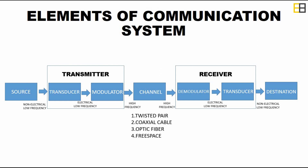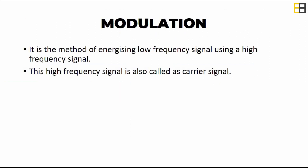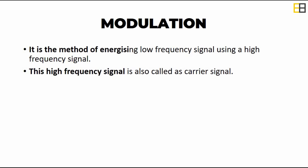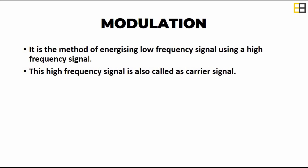The transducer converts the signal to a non-electrical low frequency signal or the required form of the signal at the destination. As said earlier, modulation is the process of energizing a low frequency signal using a high frequency signal. This high frequency signal is called the carrier signal. Before going into the next topic, let us understand what is meant by bandwidth.